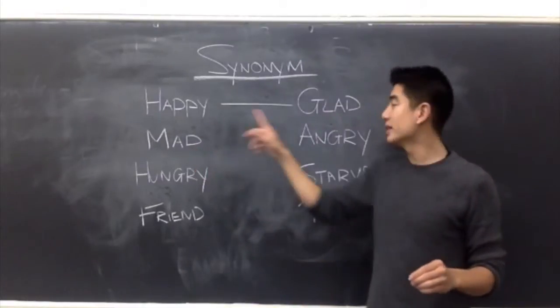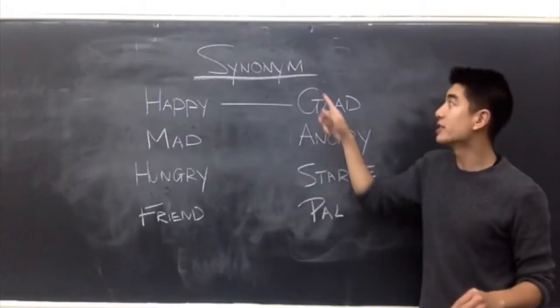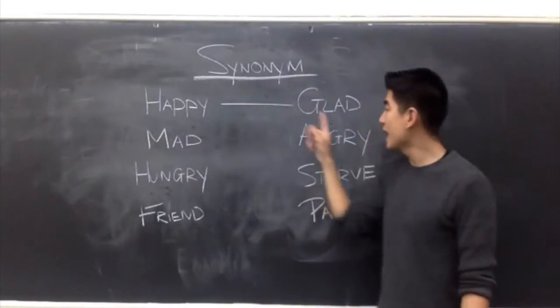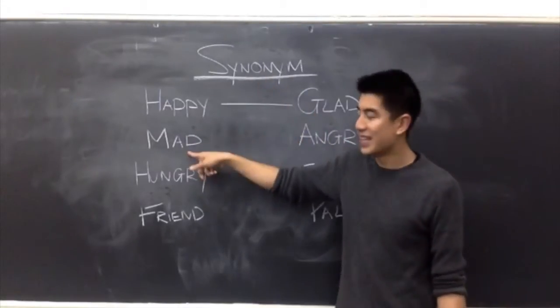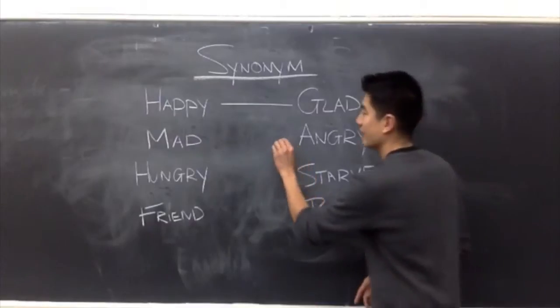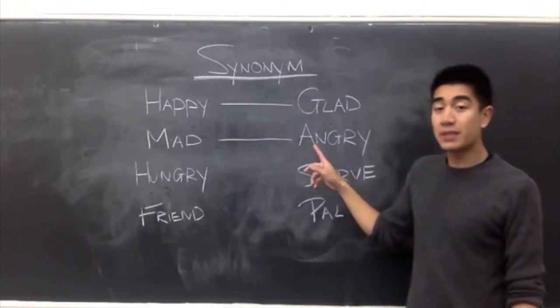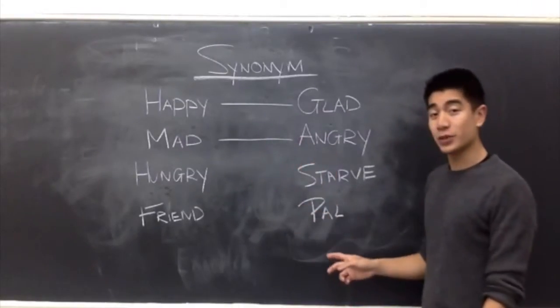Mad, angry. Mad and angry are synonyms to each other. So the synonym of mad is angry. The synonym of angry is mad. They have similar meaning, but they're still different words. All right, let's do the next one.